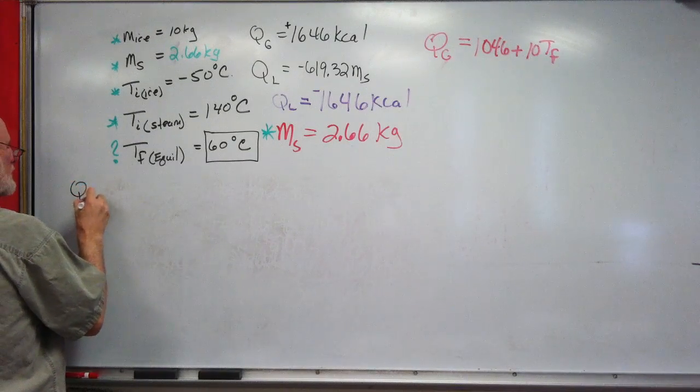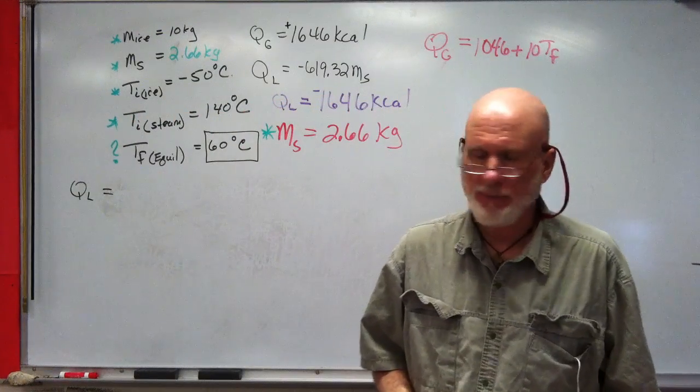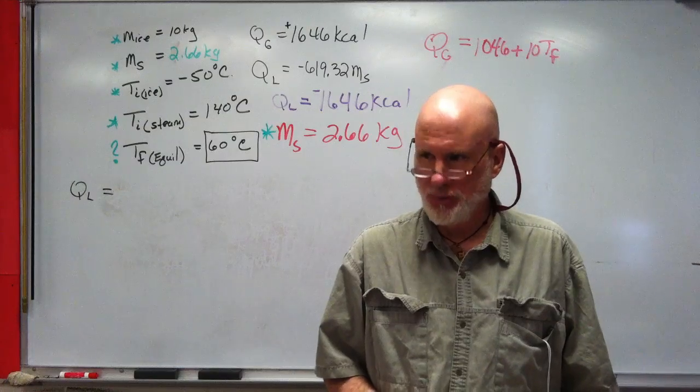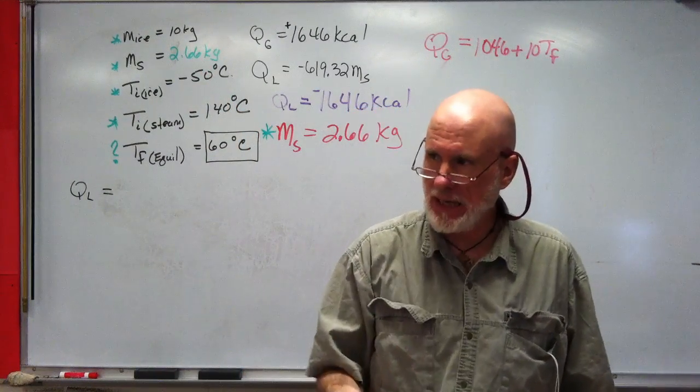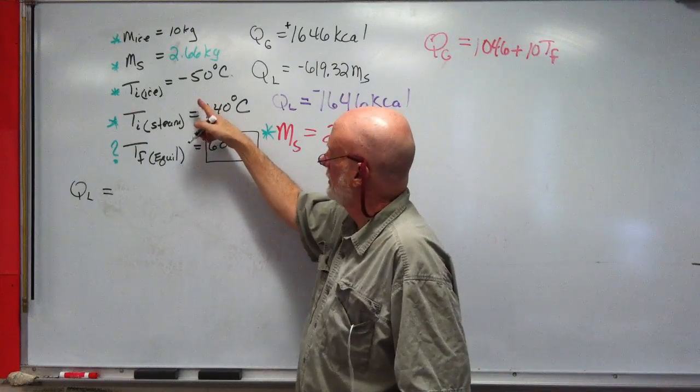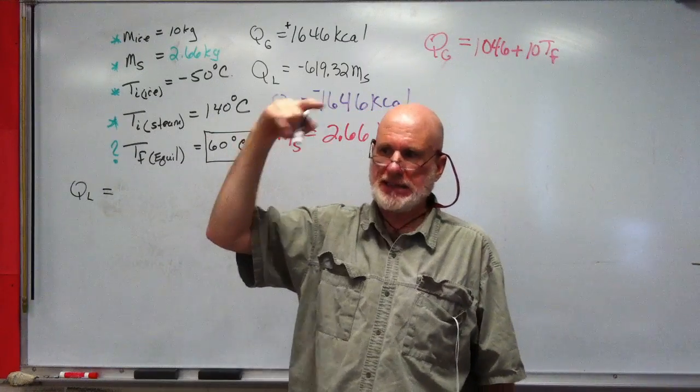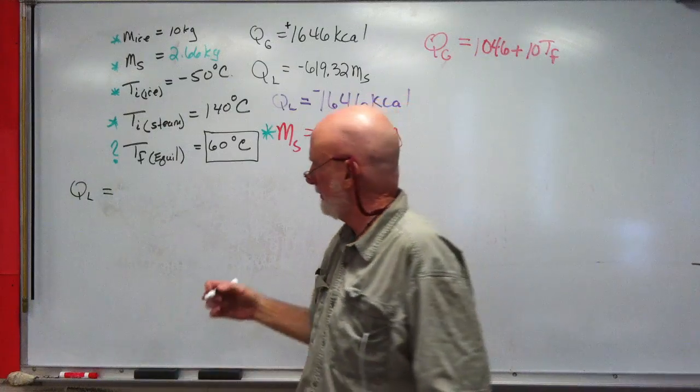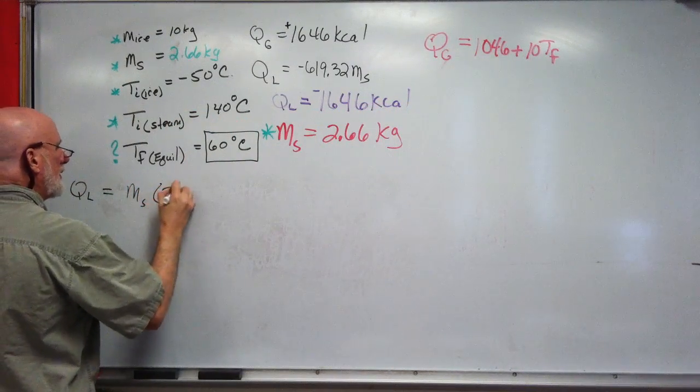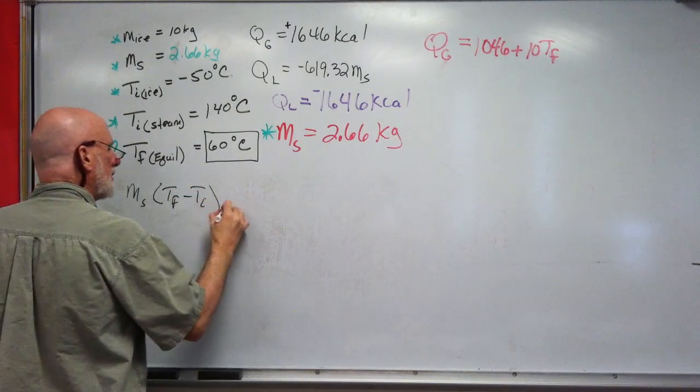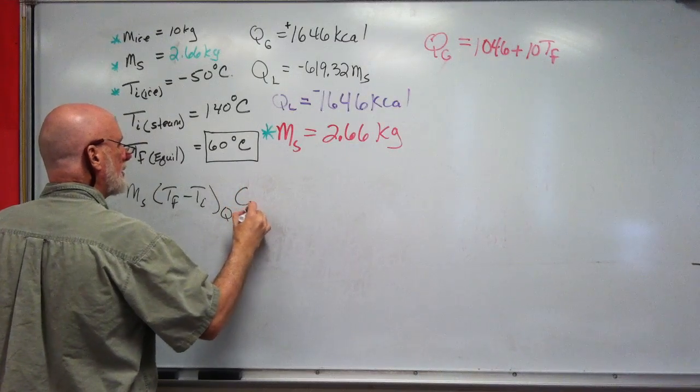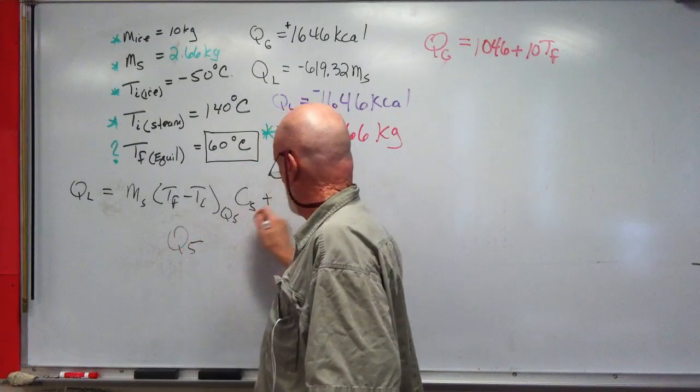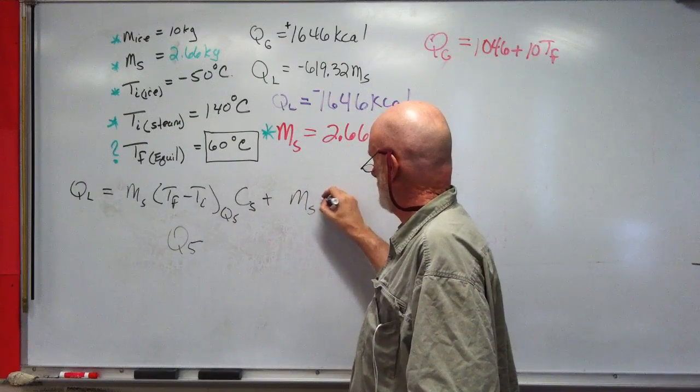Q lost. Mass times—what's the mass? 2.66, right. So 2.66 times 100 minus 140 is negative 40. So 2.66 times negative 40 times 0.483. It would be mass of steam times TF minus TI times C steam.